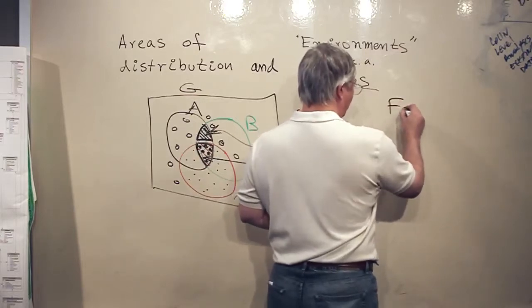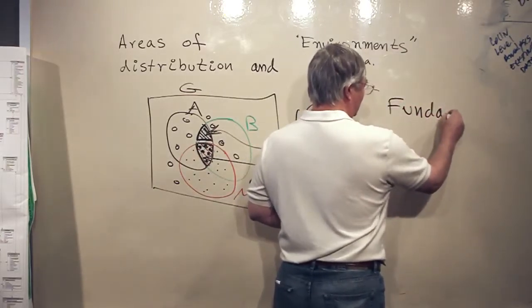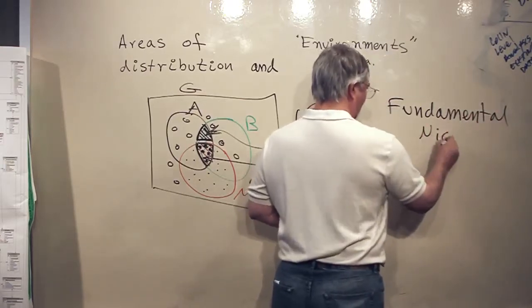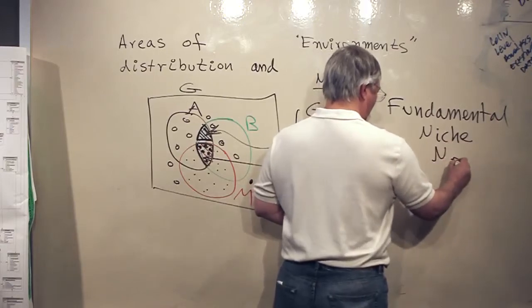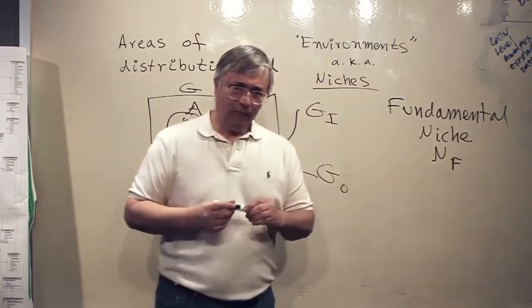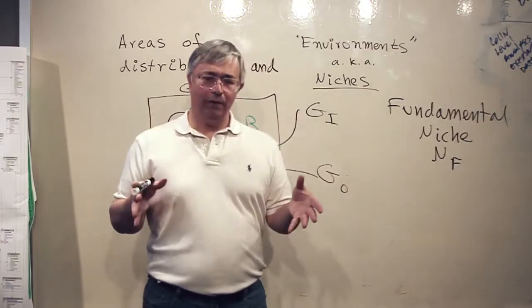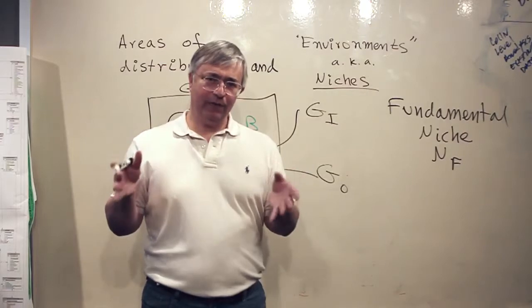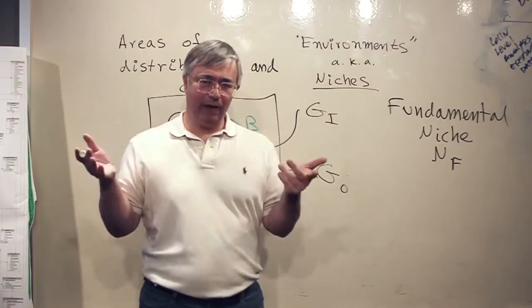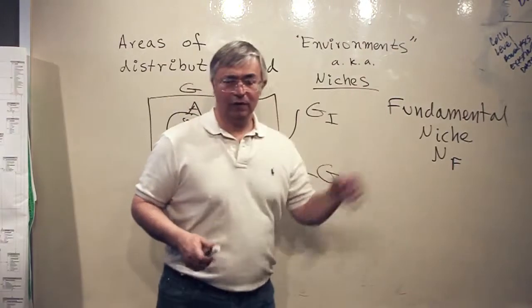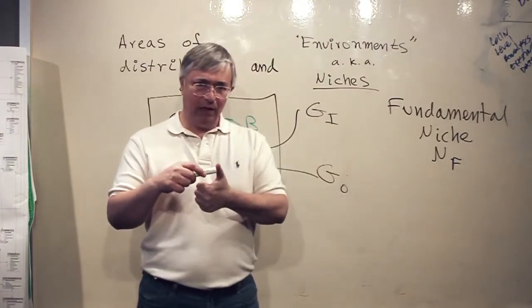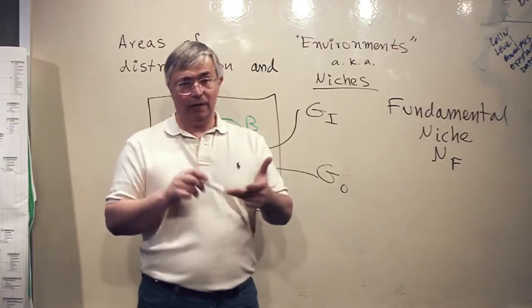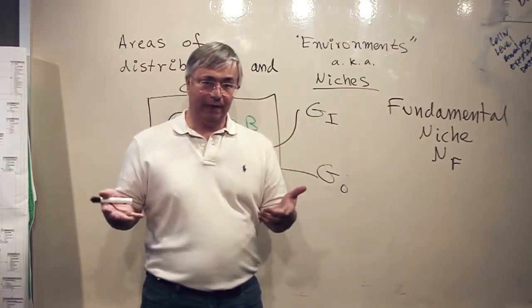The thing that is called the fundamental niche or NF are the set of all the limits, the tolerance limits for the species in the multivariate space of environmental variables. That can be temperature, precipitation, extremes of those two, radiation, features of topography, things like that.